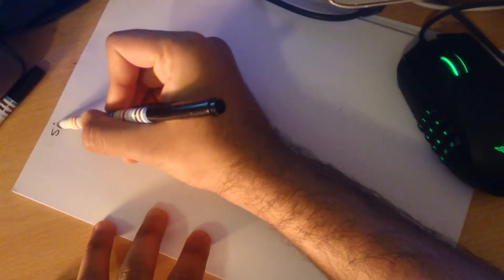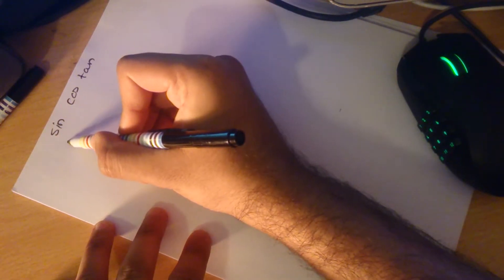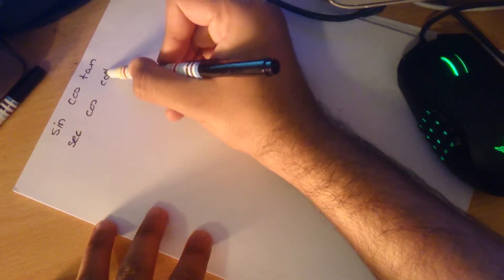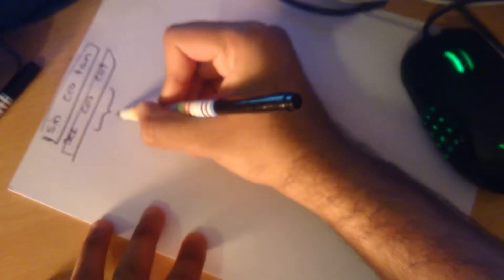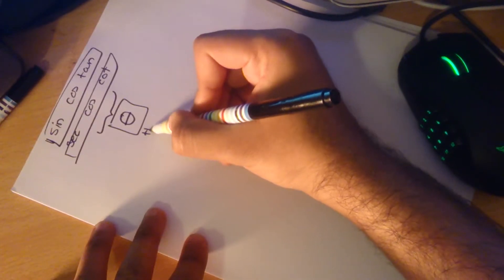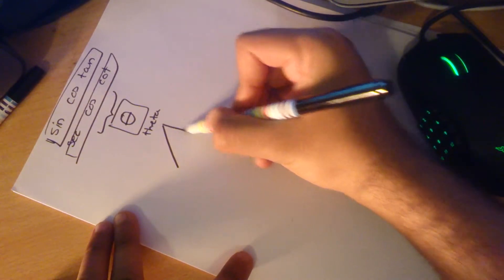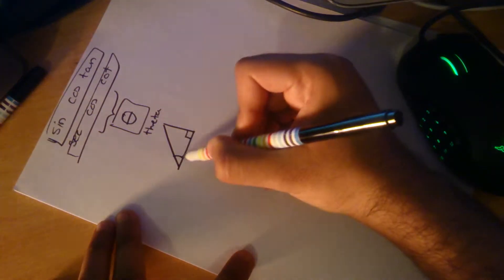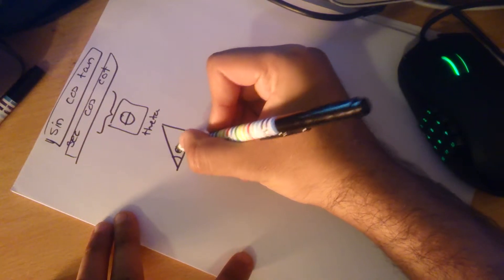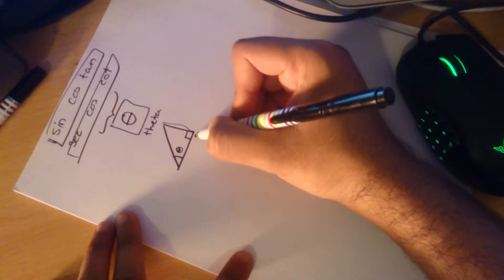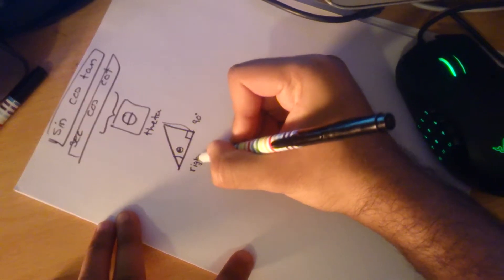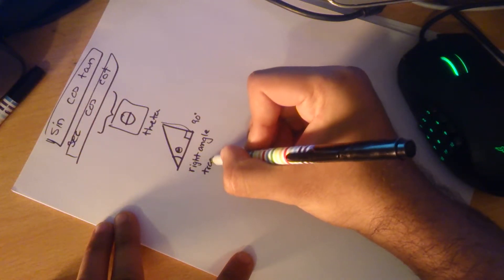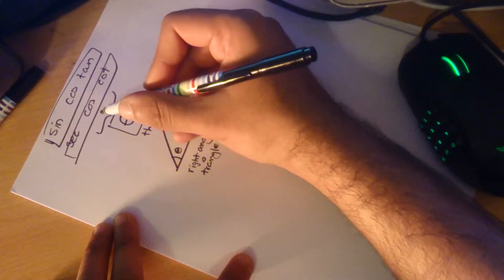Good evening. Today I will show you a simple way to understand the relationship between sine, cosine, tangent, secant, cosecant, and cotangent. They are all linked with the angle theta. They are all related in a right angle triangle, where two segments are separated vertically and horizontally by a 90-degree angle.